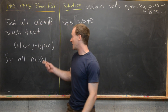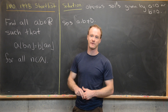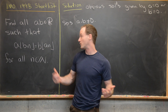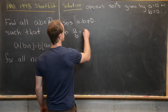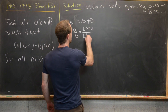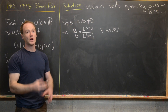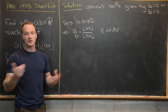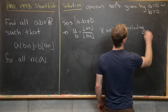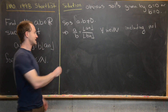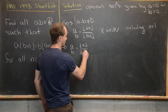Having A and B nonzero lets us rearrange the equation so everything with a floor is on one side: A over B equals the floor of A·N over the floor of B·N, for all natural numbers N. In particular, using N equals one gives us A over B equals the floor of A over the floor of B.